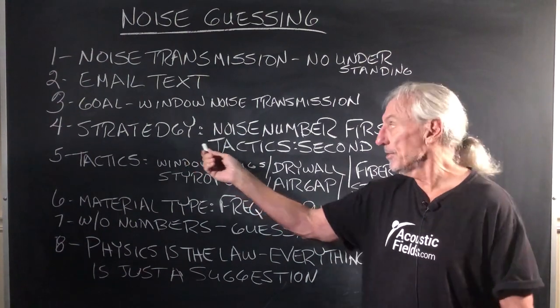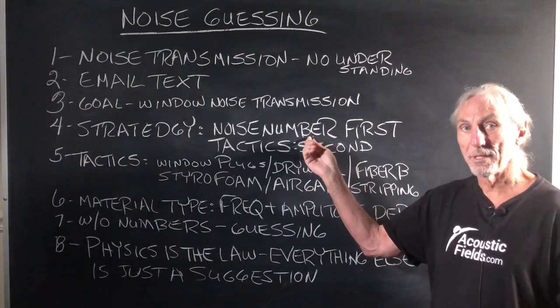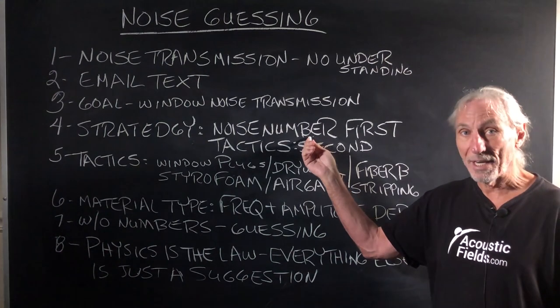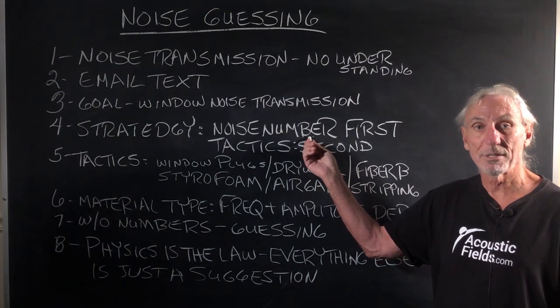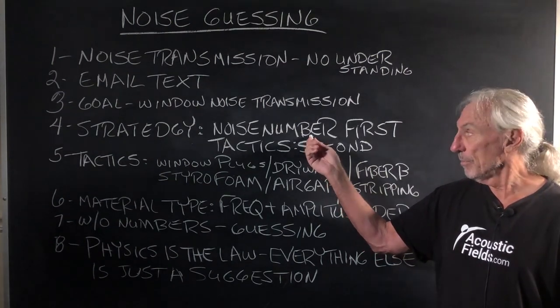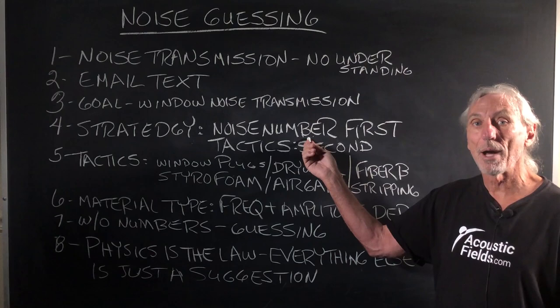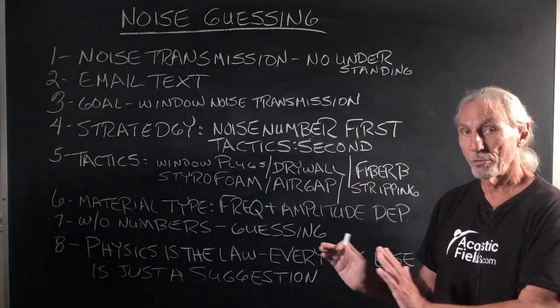If there was a strategy, we'd have numbers. We know what we're fighting. We know how big the enemy is. How many people it has that we have to fight. We would have all of the problem defined. Problem, solution.